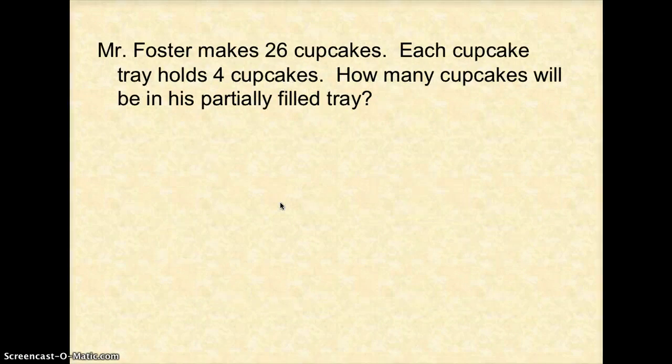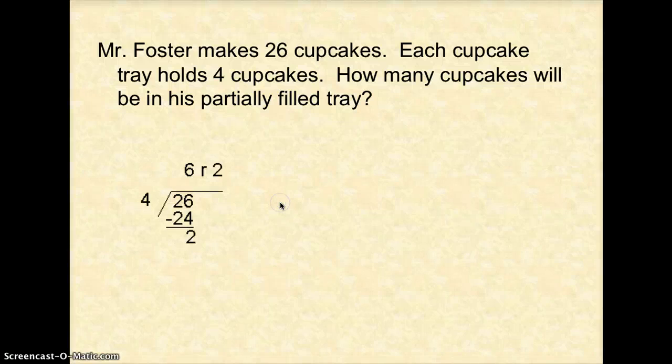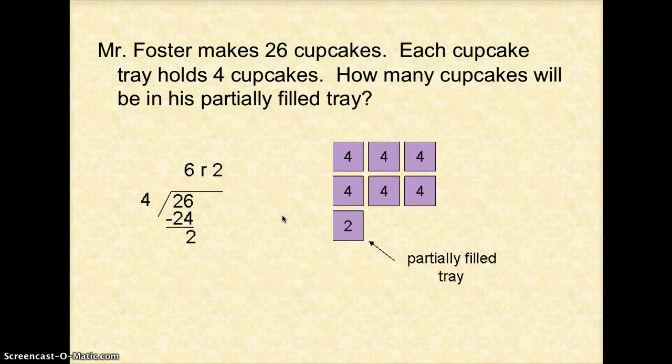Mr. Foster makes 26 cupcakes. Each cupcake tray holds 4 cupcakes. How many cupcakes will be in his partially filled tray? So again divide it out. 4 can go into 26, 6 times. So 4 times 6 is 24, with a remainder of 2. How many in the partially filled tray? So again the answer is what is left in the partially filled tray. That's what they want. So your answer is your remainder on this one as well.